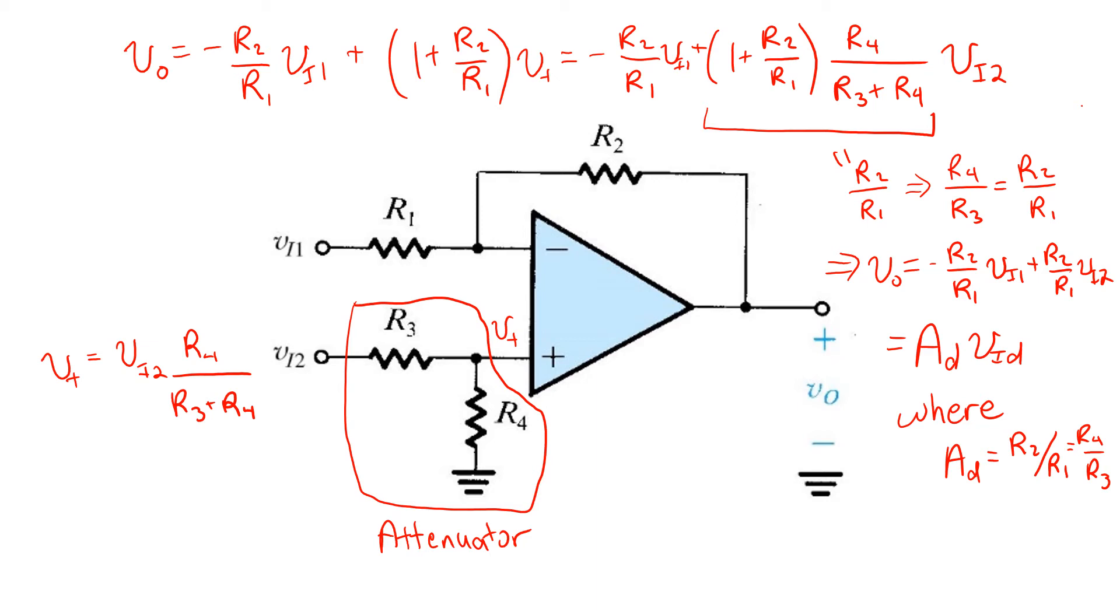Note also what's missing in the gain expression here. There's no term over here that depends on the input common mode gain. That is to say, this difference amplifier has zero common mode gain or infinite common mode rejection ratio.